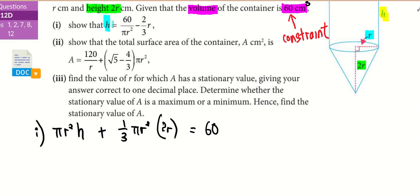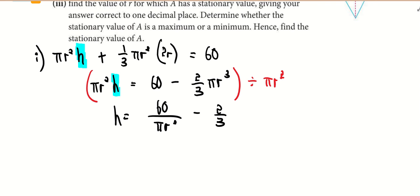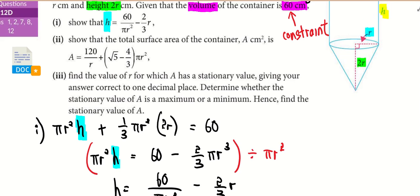Now your job is very simple: change of subject or formula. Make h the subject—you only need two steps. I want to make h the subject as indicated over here, so the term with h I don't touch it. The term without h I balance on the right-hand side of the equation. So I continue writing: πr²h = 60 minus 2/3πr³. If I only want to make h the subject, what do I do to the πr²? I divide everything by πr². So what would I get? 60 over πr² minus 2/3r.